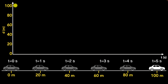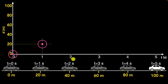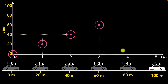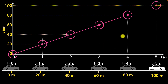Now let's plot these values on the graph — the distance values on the vertical and time values on the horizontal. The first point is at (0, 0). When time is one second, distance is 20 meters — we draw dotted lines and mark that point. For two seconds, 40 meters. For three seconds, 60 meters. For four seconds, 80 meters. And for five seconds, 100 meters. When we connect all the dots, we get a straight line. This straight line represents the motion — this is how we draw motion on a piece of paper.